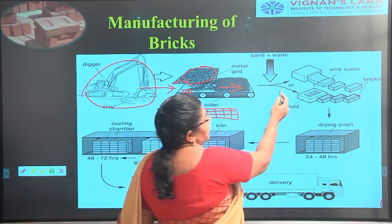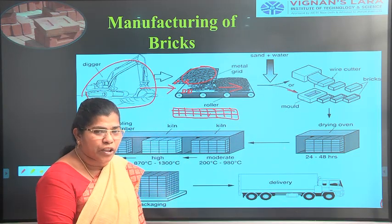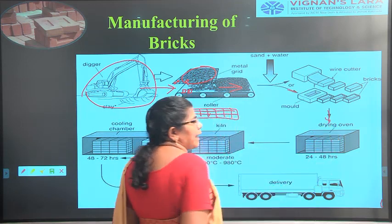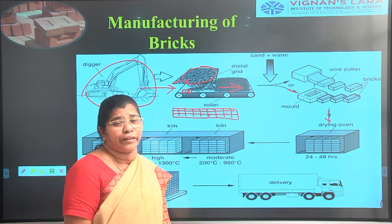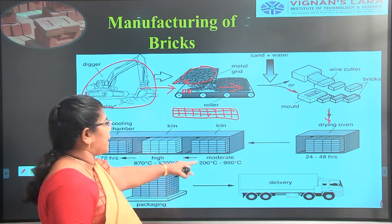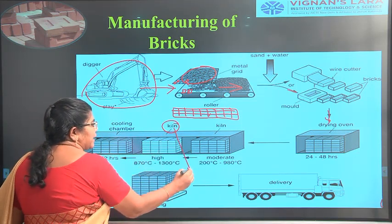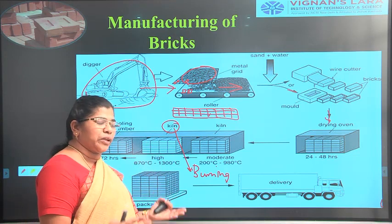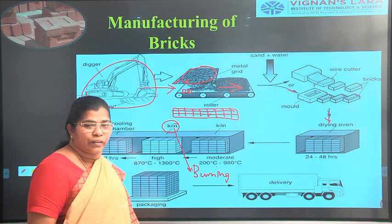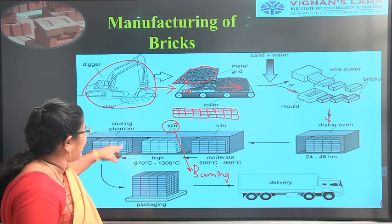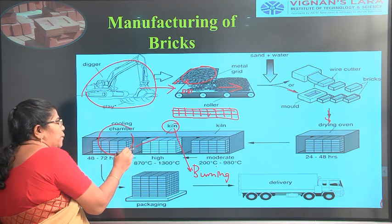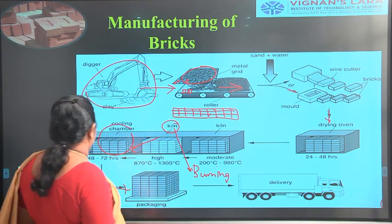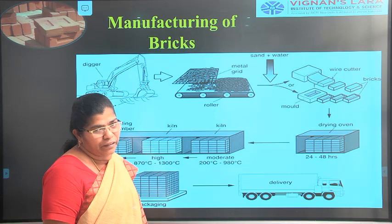After preparing the clay, it is taken to the mold — either hand mold, machine molding, or ground molding. After molding, it is taken to an oven for drying or kept in open air in the sun for 24 to 48 hours. Then it is taken to the kiln where burning takes place at temperatures up to 1100 degrees centigrade. After the kiln, it goes to a cooling chamber, then is packaged and delivered.